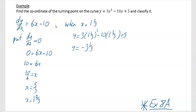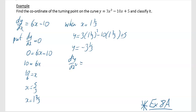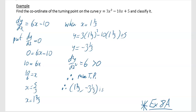To find d²y/dx², differentiate dy/dx = 6x − 10 again, which gives 6. Since 6 is greater than zero, it is a minimum turning point. Write it as TP (turning point): the coordinates (1⅔, −3⅓) is a minimum turning point.